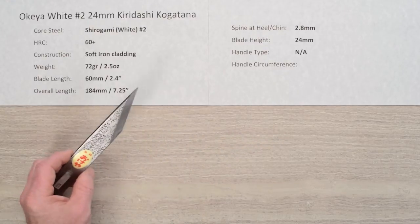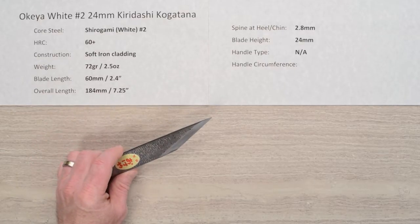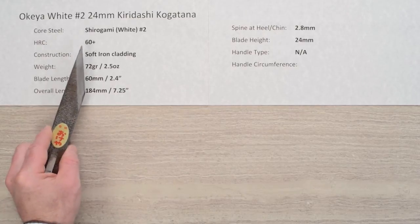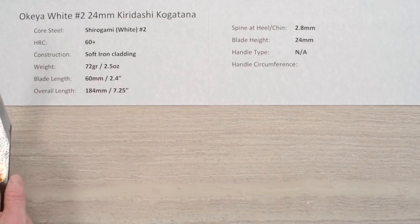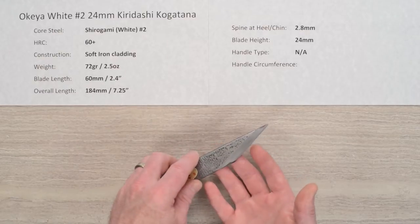The core steel is, as I mentioned, Shirogami or white paper number two reactive carbon steel. Heat treat is not specified on the site so I'm going to assume it's around 60 Rockwell-ish, and the construction is a soft iron cladding over the top of that core steel.